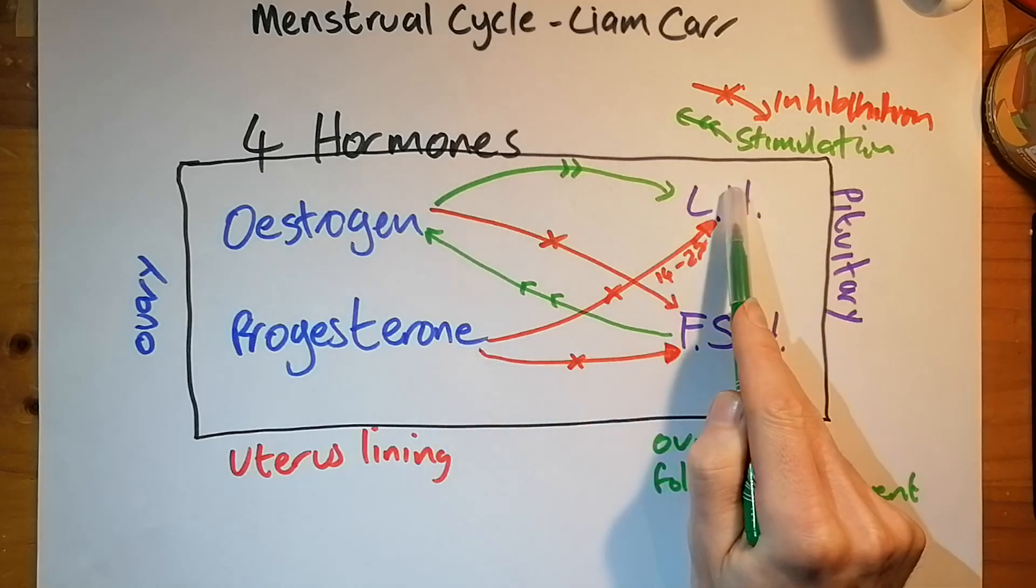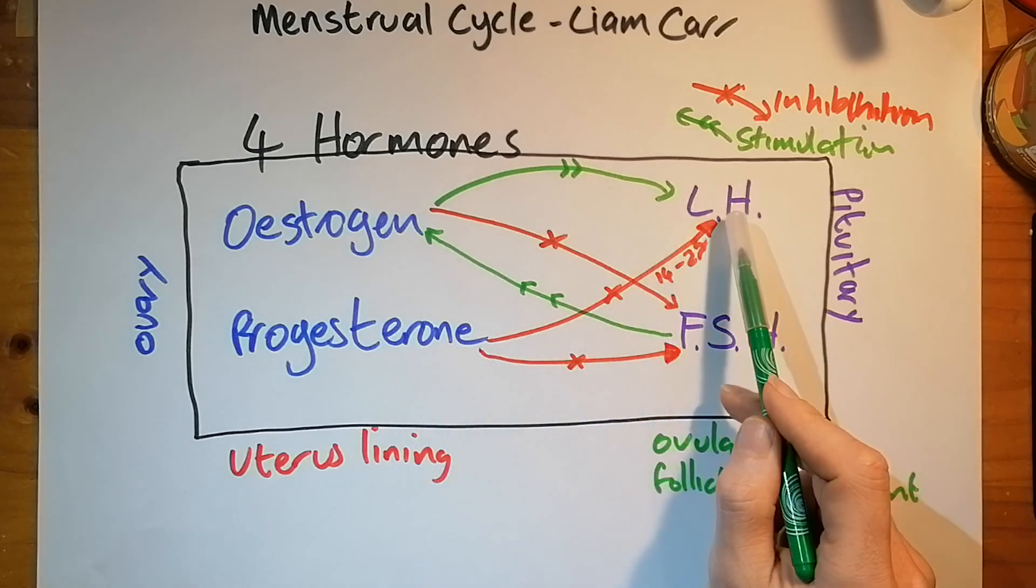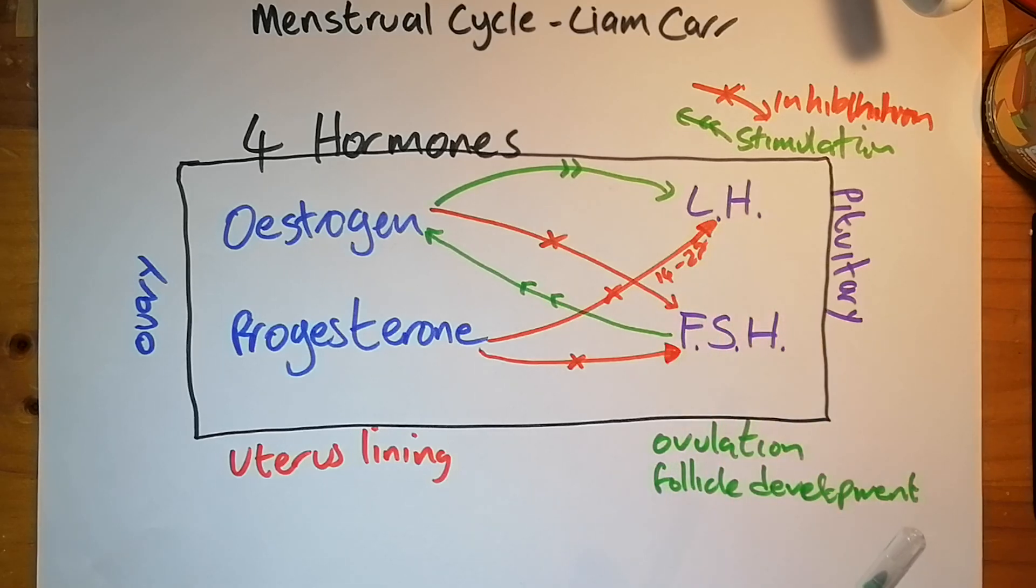While progesterone is high, the levels of these two hormones, LH and FSH, are low. So then it follows that progesterone would inhibit LH and FSH. That's all for now. I hope you found it interesting and informative. I do, will repeat what I said at the start.